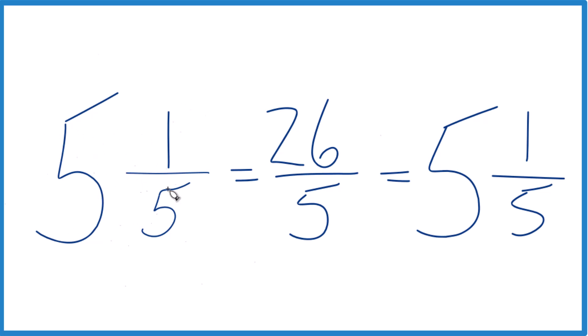And these numbers here, 5 and 1/5, that's equal to 26/5. They have the same value, it's just that this is represented as an improper fraction here, and 5 and 1/5, that's the mixed number we started out with.